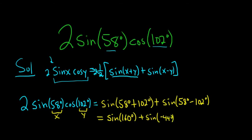And now what you can do is you can pull the negative out. You can do that with the sine function. Whenever you have a negative, you can pull it out. So it's negative sine of 44 degrees.